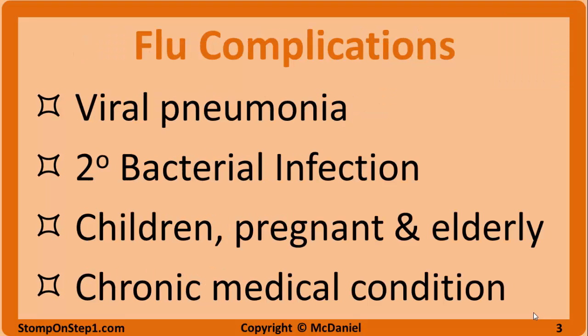The general public thinks of the flu as a relatively mild infection. However, serious complications and even death are possible, especially in high-risk populations. There are hundreds of thousands of deaths worldwide attributed to the flu each year. The infection can spread into the lower respiratory tract and cause viral pneumonia, or weaken the immune system leading to a secondary bacterial infection, aka superinfection.